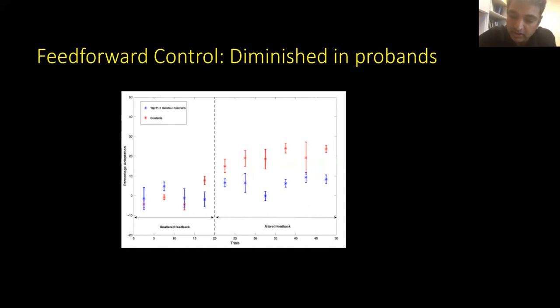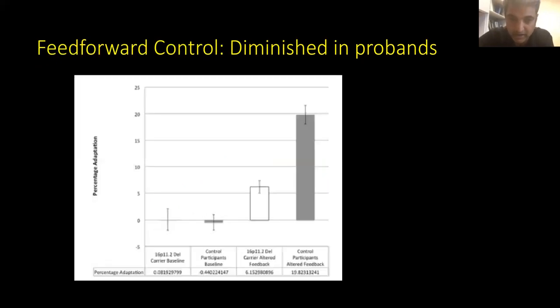So the next slide, I'm just showing you the quantification. Here is the baseline performance in both the controls and the deletion carriers, which is very similar in the baseline unaltered feedback. And when you alter it, you can see here, the controls adapt about 20% and the probands adapt about 6%. And it's highly statistically significant, even for this small sample that we collected this data on.